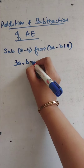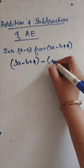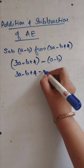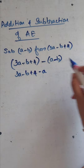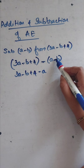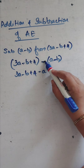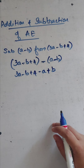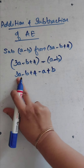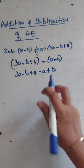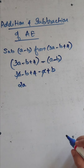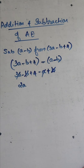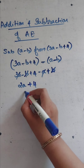So we have 3a minus b plus 4 minus (a minus b). When you remove the bracket, minus outside times minus inside gives plus. So it becomes 3a minus b plus 4 minus a plus b. Now collecting like terms: 3a minus a is 2a; minus b plus b is 0, they cancel. The remaining constant is 4. So the answer is 2a plus 4.